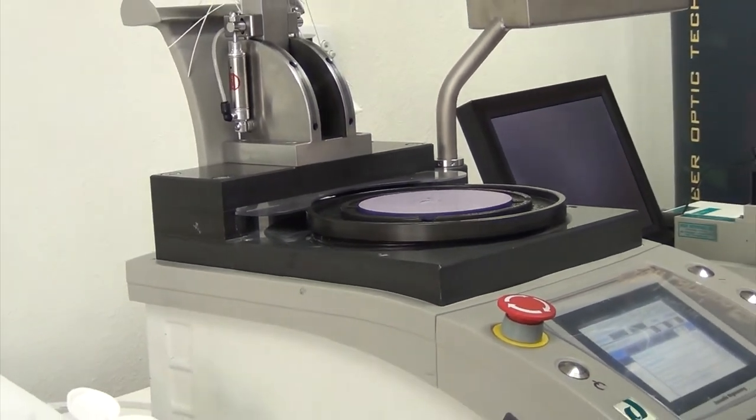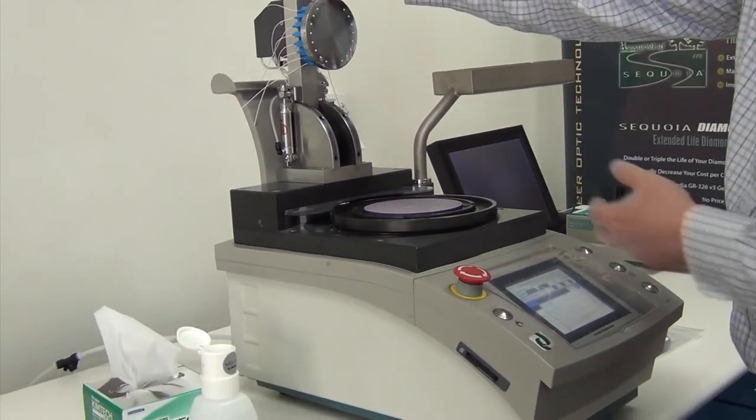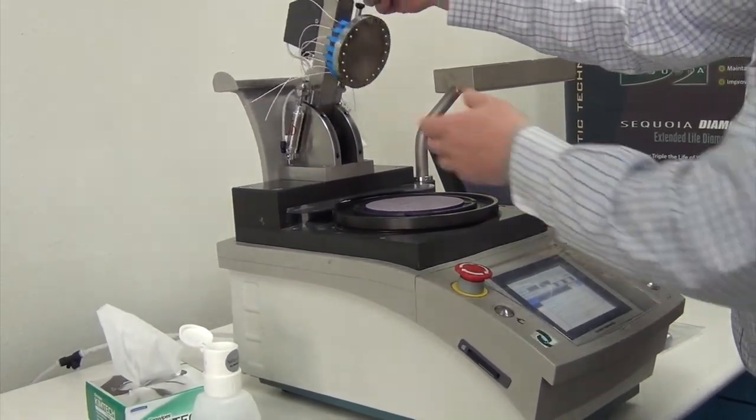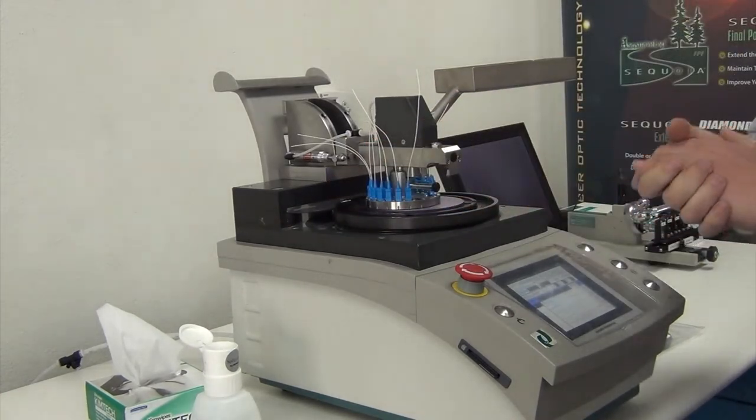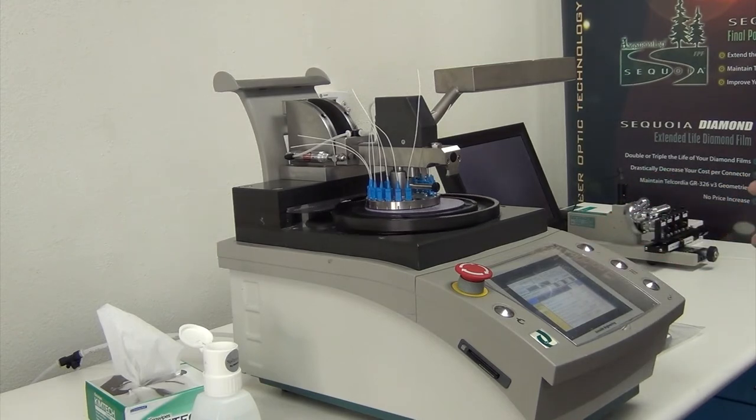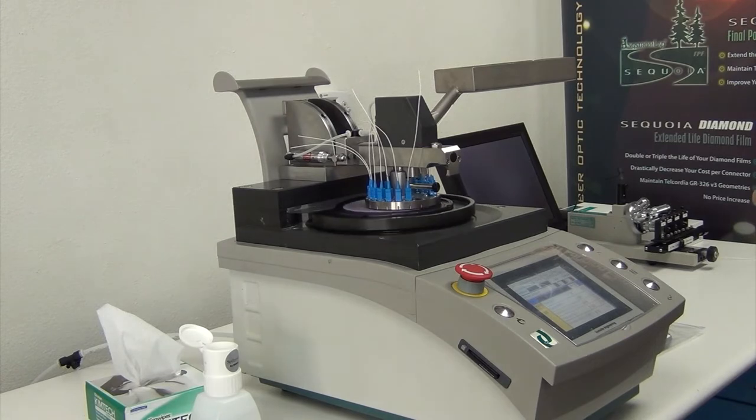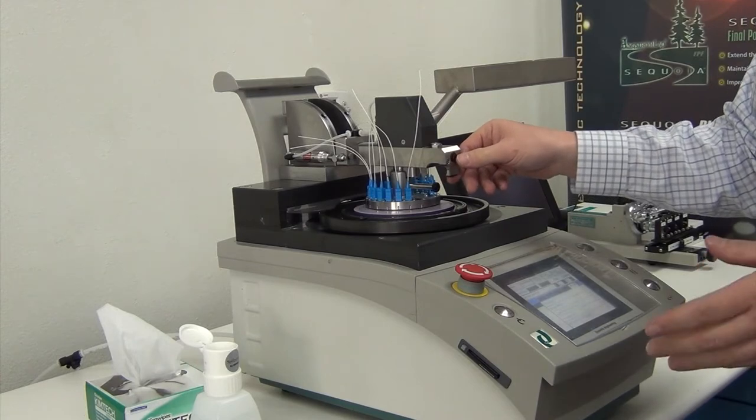Most processes run anywhere from 3 to 5 steps for single fiber connectors. We are now demonstrating how to lubricate the film. Bring the connectors down to position and let the cycle run. Most polishing cycles last 15 seconds to 60 seconds, depending on the film, the type, and which step it is in the process.